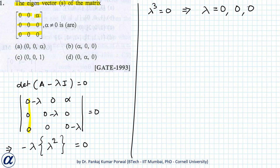All the eigenvalues of this matrix are zero. To find the eigenvector corresponding to lambda equals zero, we use the equation A x equals lambda x, which is just equal to zero.